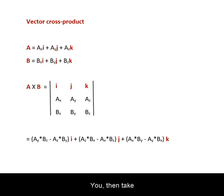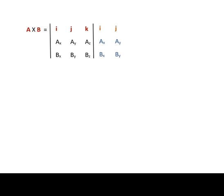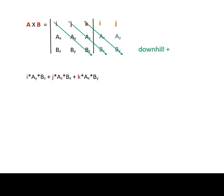You then take the determinant of the matrix. One way to take the determinant is to write out the first two columns again.